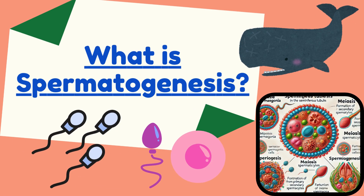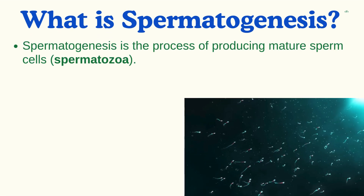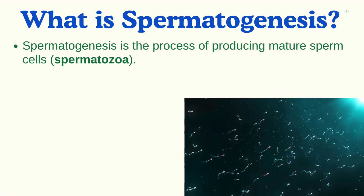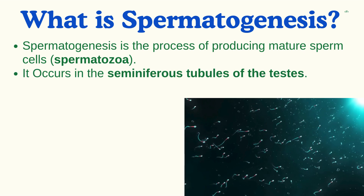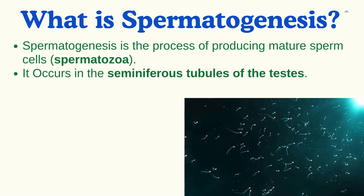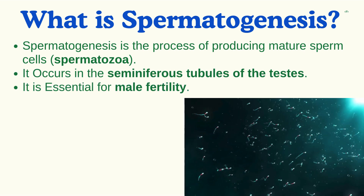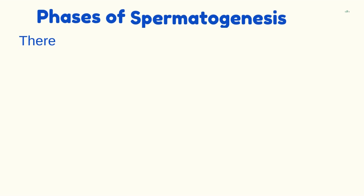In this video we will talk about what is spermatogenesis. Spermatogenesis is the process of producing mature sperm cells, spermatozoa. It occurs in the seminiferous tubules of the testes and is essential for male fertility.